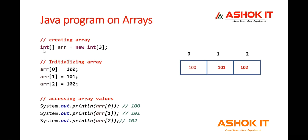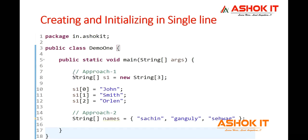So with this, we understand how to create an array, how to initialize it, and how to access array values based on index. We can create and initialize arrays in two ways. In Approach 1, we create the array with a size and then initialize values using indexes on separate lines. In Approach 2, we create and initialize in a single line directly with values. Both arrays end up with size 3—both approaches are equivalent.